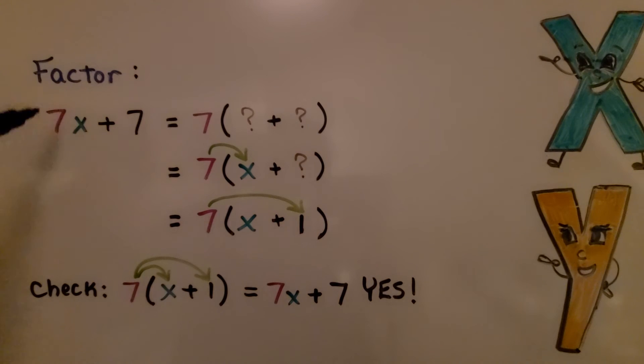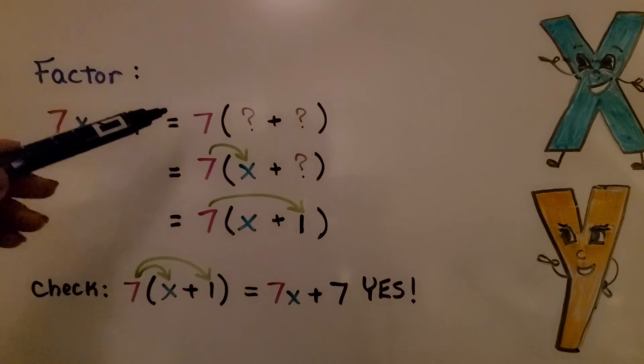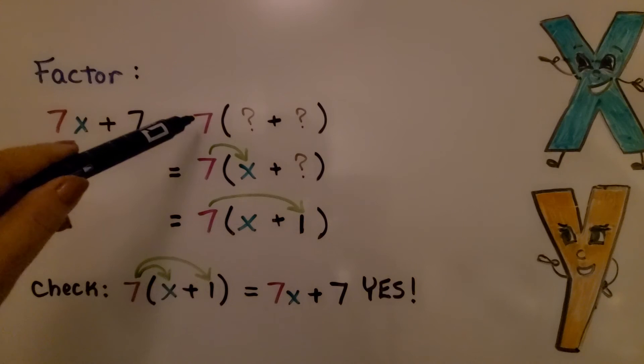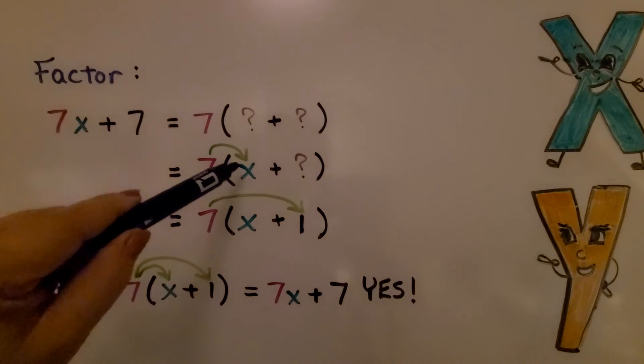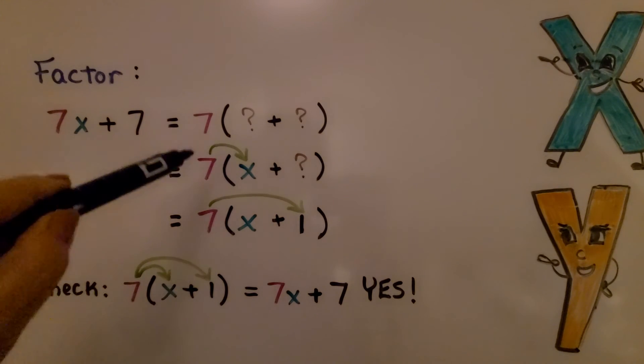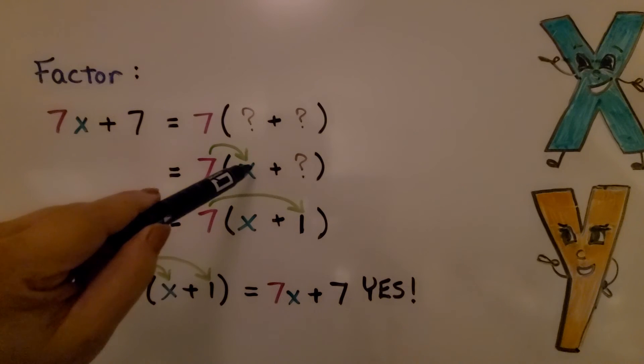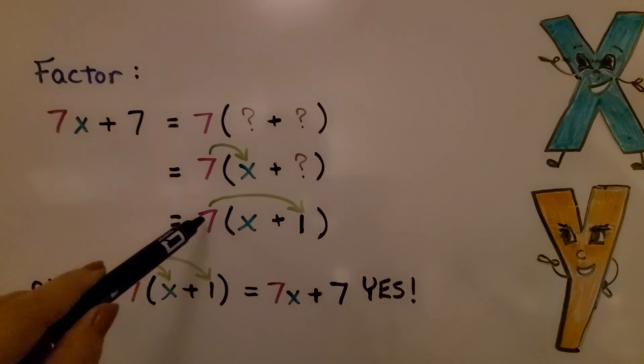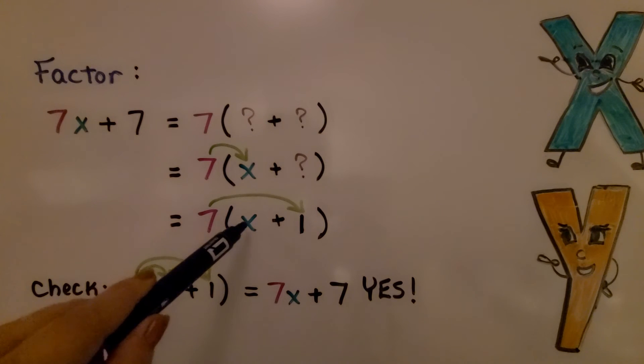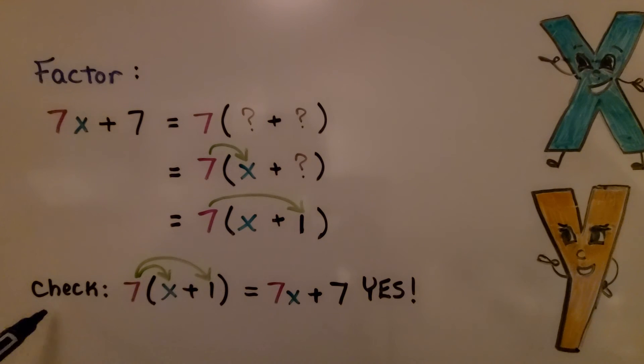Here we need to factor 7x plus 7. We think 7 on the outside of parentheses times something plus something. To get 7x, we need to put an x inside the parentheses. That will give us 7x when we do the distributive property. Now we need a 7—7 times something is 7. That would be 1. We have 7 outside the parentheses, and inside we have x plus 1. When we check it with the distributive property, we get 7x plus 7 times 1 is 7. Yes, we did it correctly.